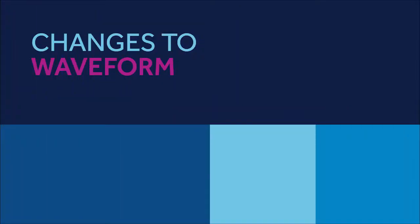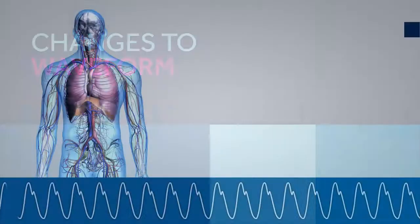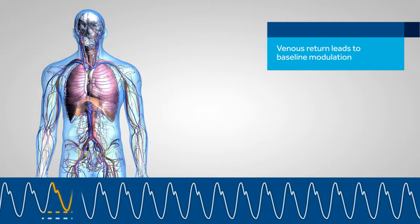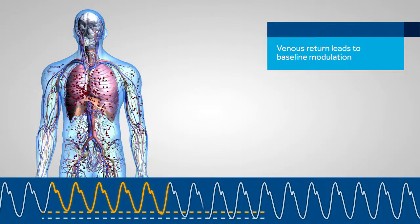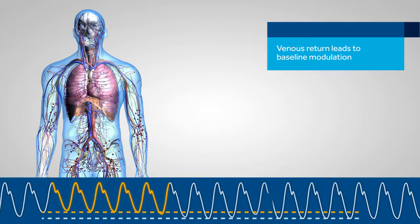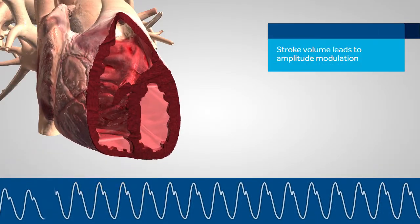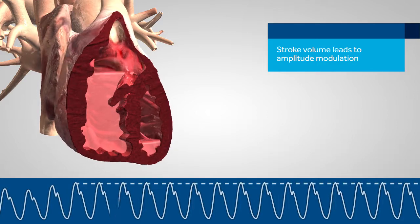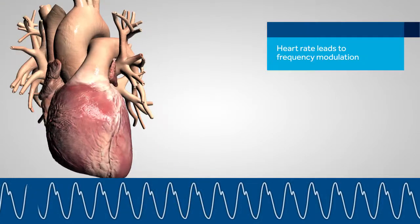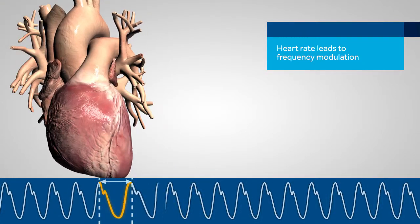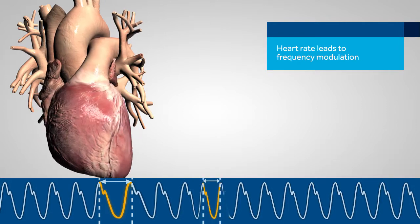The corresponding changes to the pleth waveform during inspiration can take different forms. As venous return increases, blood in the extremities is redistributed back to the core, reflected in a decrease in the baseline modulation of the pleth waveform. The decrease in stroke volume is reflected in a decrease in the amplitude modulation, or the height of the pleth waveform. And as heart rate increases, the frequency modulation, or the distance between pleth waveform peaks, decreases.